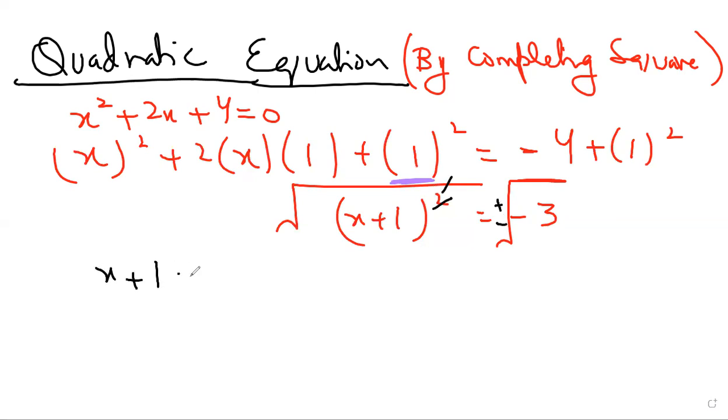x plus 1 will remain here, plus minus root 3 iota will be there. The first solution will be minus 1 plus minus root 3 iota. This is the combined form, and we can write it as minus 1 plus root 3 iota.